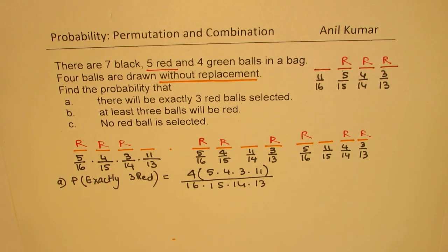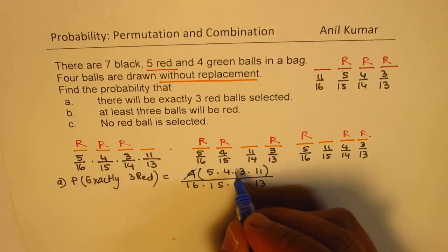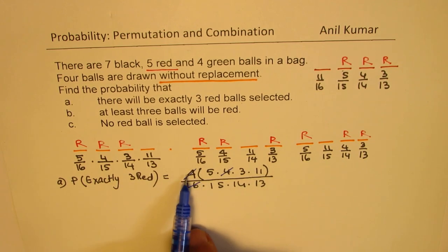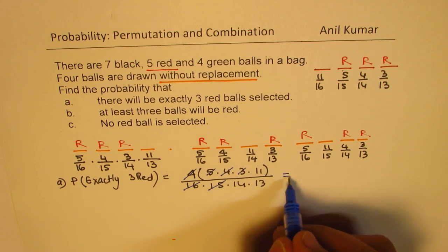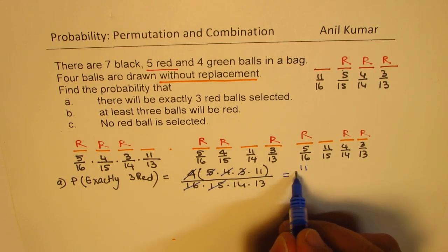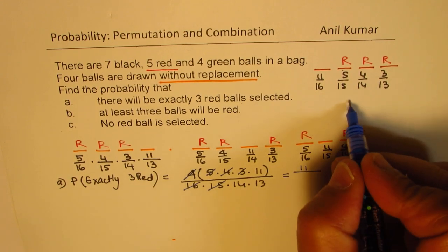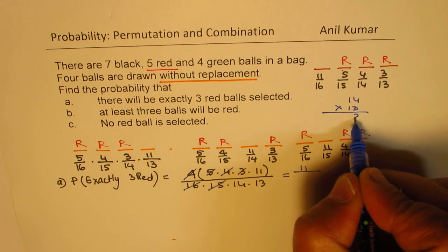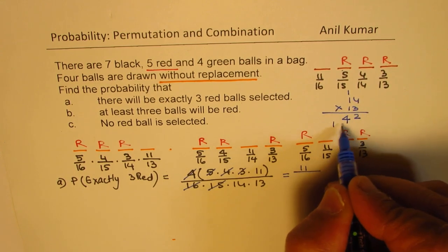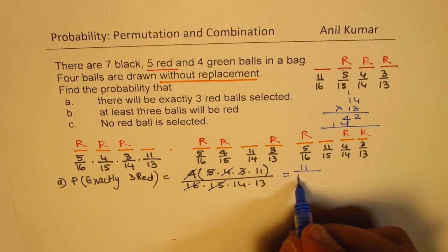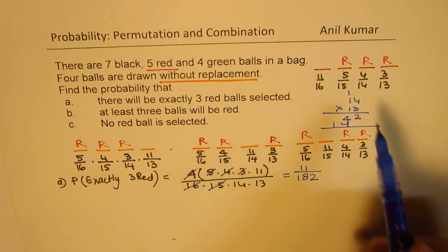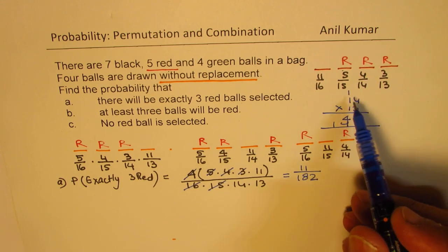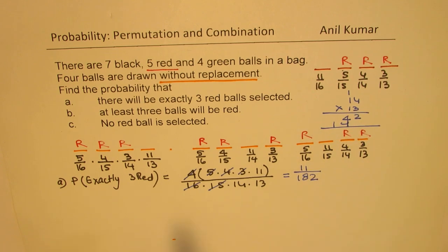Now we can simplify this. 4 times 4 is 16, so 16 goes away. 5 and 3 is 15, so 15 goes away. We are left with 11 on the top, and the denominator is 14 times 13. 14 times 13 is 182. So the probability of getting exactly 3 red balls is 11 over 182.